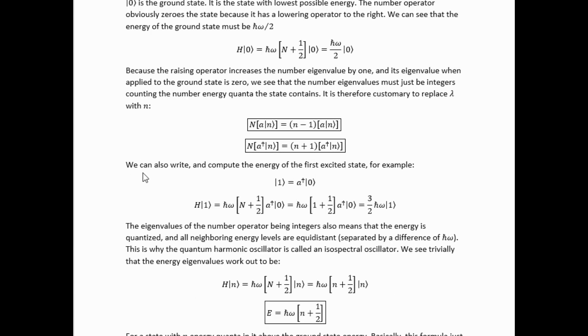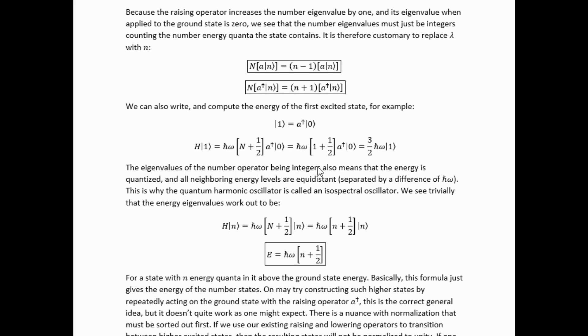Another interesting example that doesn't get to a state where the normalization problem first manifests is to look at the first excited state. We can define the first excited state like this and apply the Hamiltonian to it, and we get three halves h-bar omega as the energy eigenvalue. The eigenvalues of the number operator being integers also means that the energy is quantized, and all neighboring energy levels are equidistant. Specifically, they're separated by a difference of h-bar omega. This is why the quantum harmonic oscillator is called an isospectral oscillator.